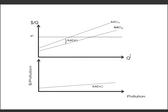So we've said that for each unit of the good Q, one unit of pollution is created. And now our marginal damage cost is the vertical distance between the marginal cost to the firm P and the marginal cost of society. And so that is a slight upward sloping curve, as you can see these two curves are getting further and further apart from each other.